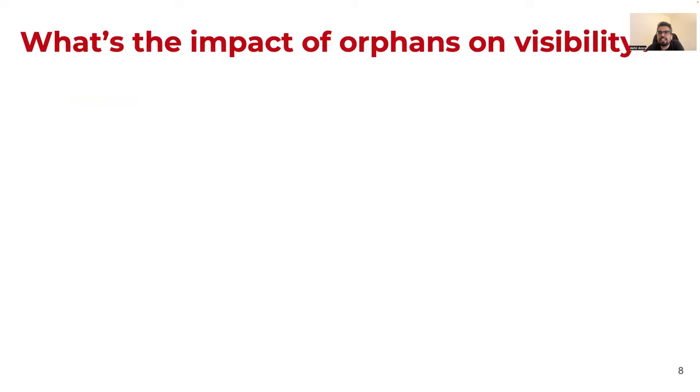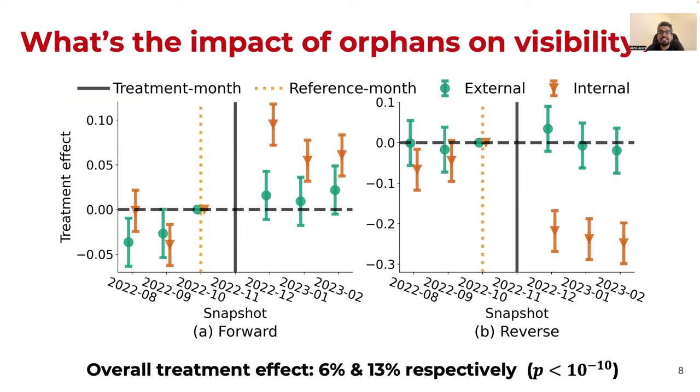Applying this setup on Wikipedia, we find around 12,000 treatment control pairs. And using a differences and differences analysis, we find that adding in-links to orphans actually causes an increase in their page views by 6 percent, whereas removing in-links from orphans causes their page views to decrease by 13 percent, as shown in the plot on the right.